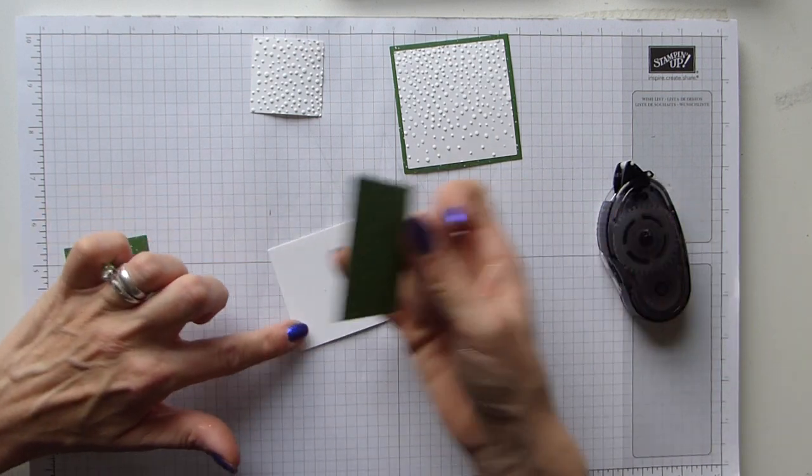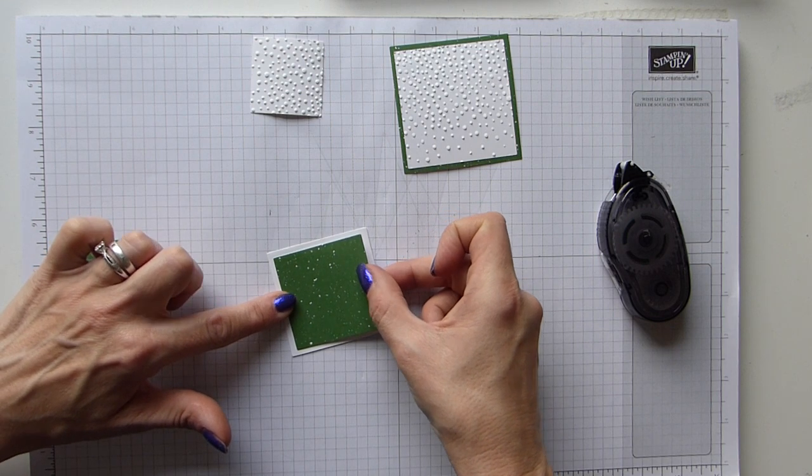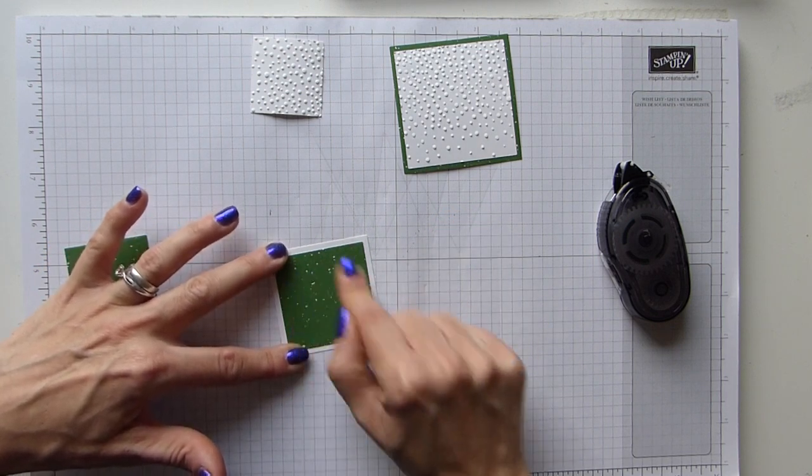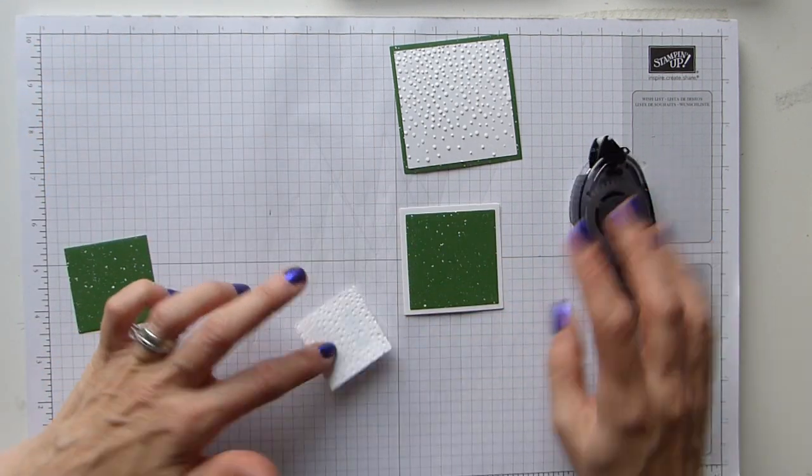So DSP onto whisper white for the middle one. And like I said, I used the layering squares for all of these, but I will be cutting this one down slightly. And then this little one goes on top of the DSP.